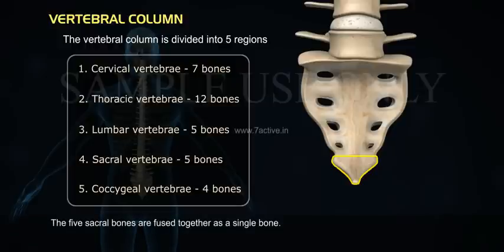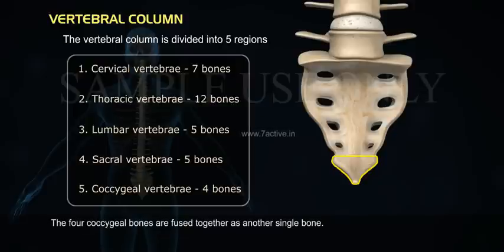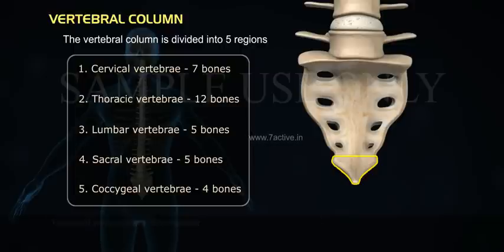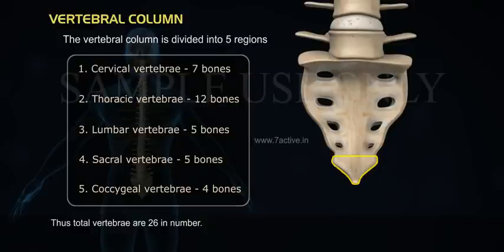The five sacral bones are fused together as a single bone. The four coccygeal bones are fused together as another single bone. Thus, the total vertebrae are 26 in number.